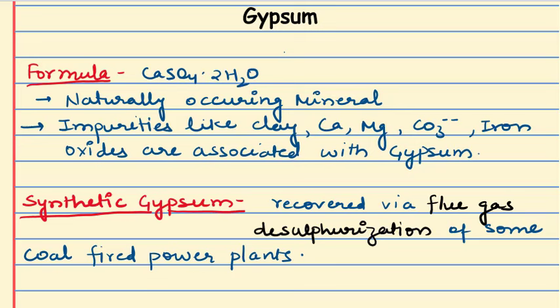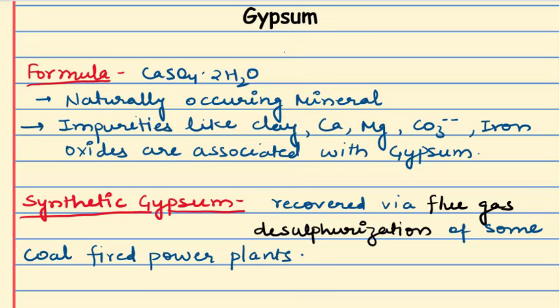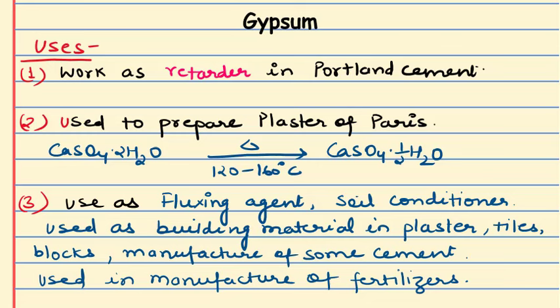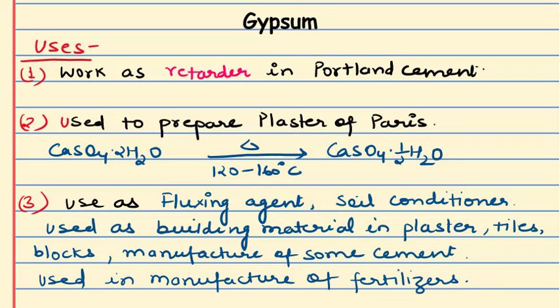We have seen the formula of gypsum and how it can be recovered synthetically. The properties include colorless, transparent, translucent, crystalline solid, available in some colors, and low thermal conductivity. Gypsum is important as a short note topic in engineering materials, mainly for two marks. I hope you understood this properly. If you have any questions, you can write in the chat box. Thank you very much everyone.